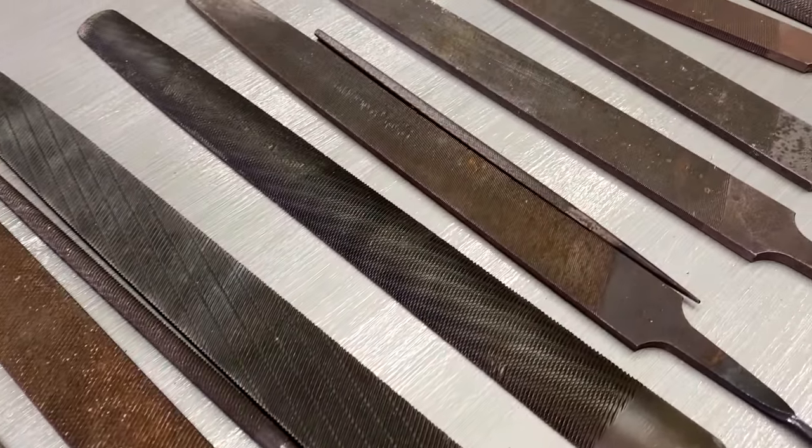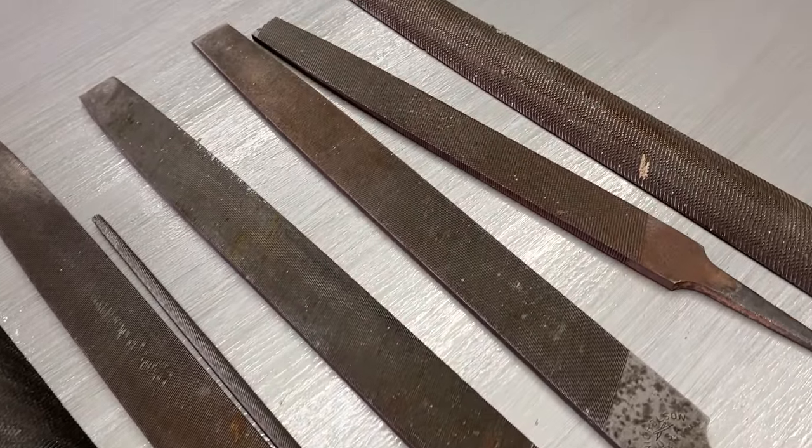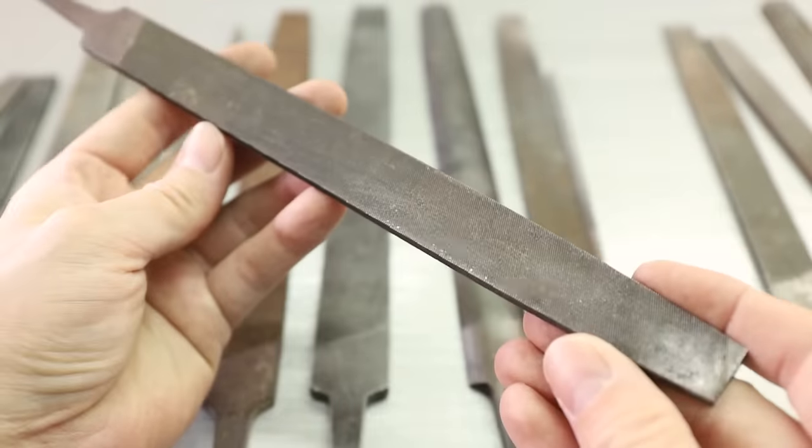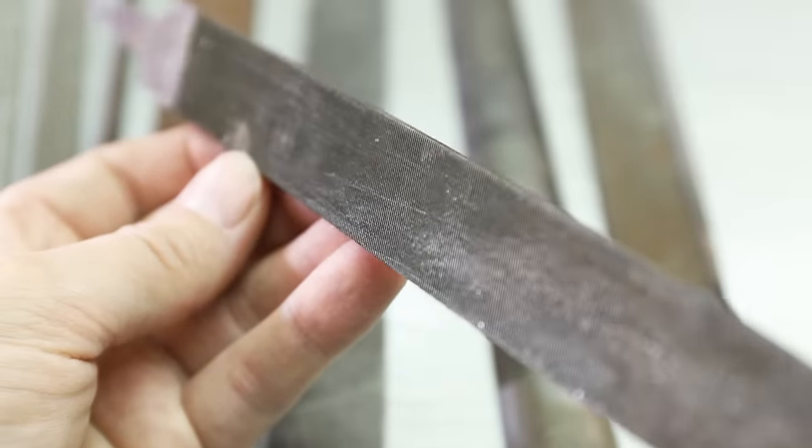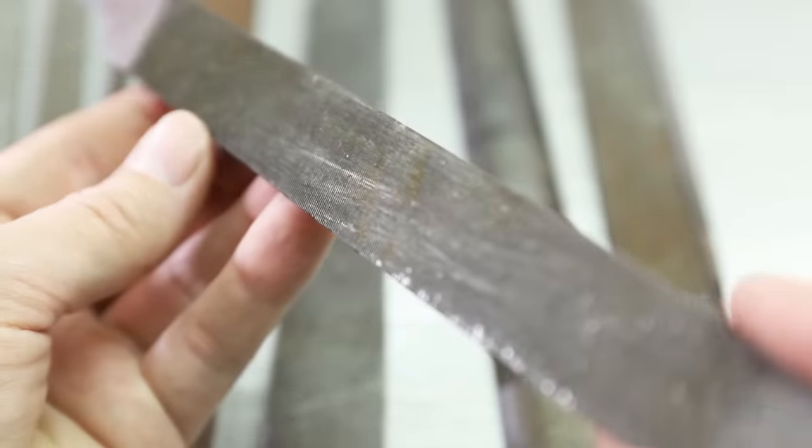I've heard that dull files can be sharpened using acid, so that's what I'm going to try in this video. You can tell a file is dull just by looking at it. If the teeth are shiny like this, then that means the tiny teeth have been rounded over slightly and they're reflecting the light. This is one of the files I'll be sharpening compared to a brand new one.